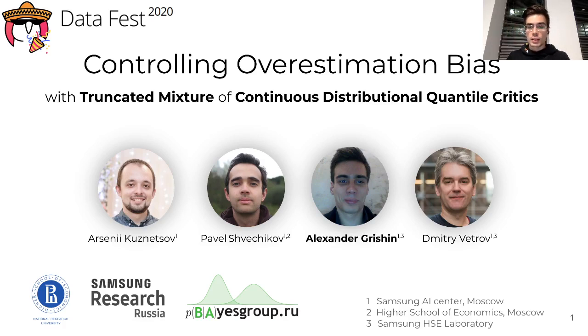Hello, my name is Alexander Grishin and today I would like to tell you about our recent paper, Controlling Overestimation Bias with Truncated Mixture of Continuous Distributional Quantile Critics. This paper is written by me and my exceptional colleagues Arseniy Kuznetsov, Pavel Shvechikov, and Dmitry Vetrov.